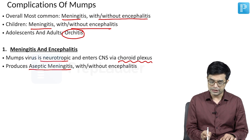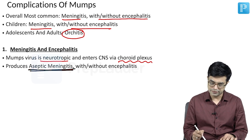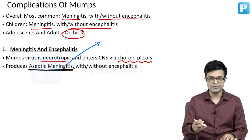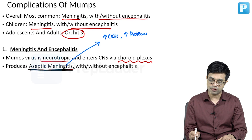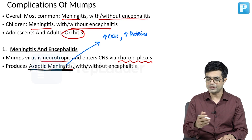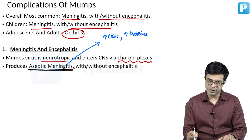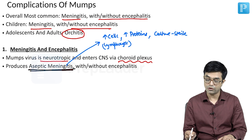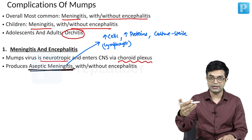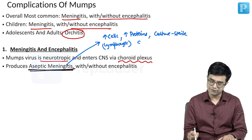It produces aseptic meningitis. The features of aseptic meningitis include raised cells, raised proteins, and pleocytosis is very common. The cells are predominantly a lymphocytic response, and culture of the CSF is always sterile on routine bacterial tests. The CSF glucose is found to be normal.